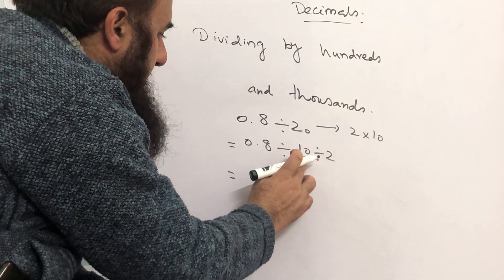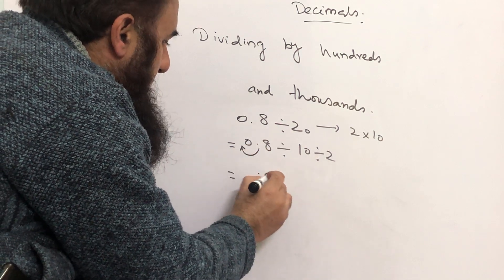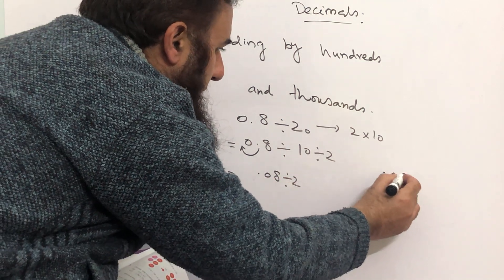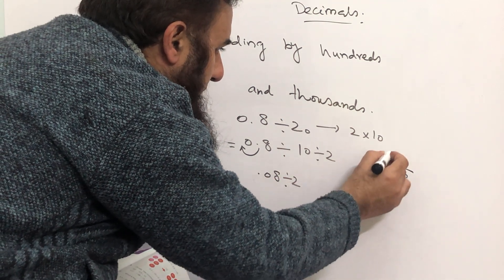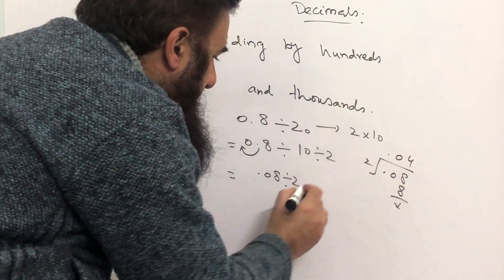So when we divide 0.8 by 10, it will be shifted here. It becomes 0.08 divided by 2. Point will come here, 0 will come here. 2 fours are 8. So 0.04 is the answer.